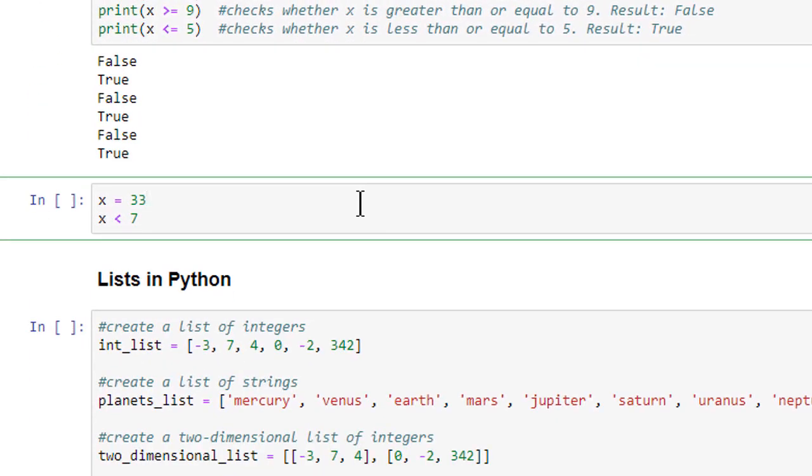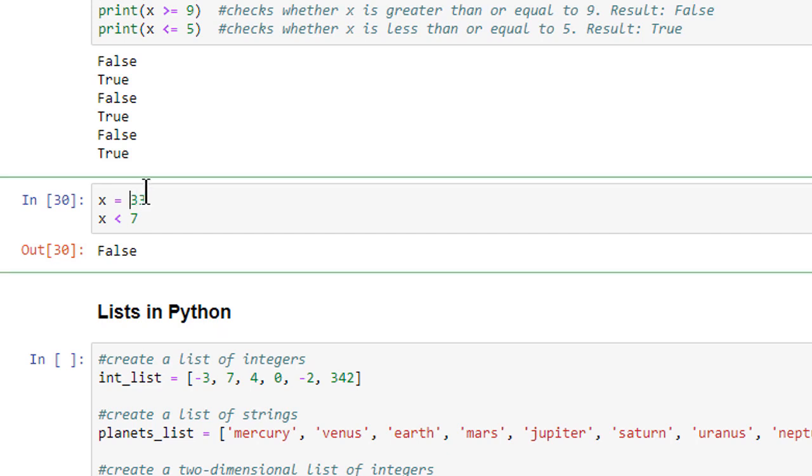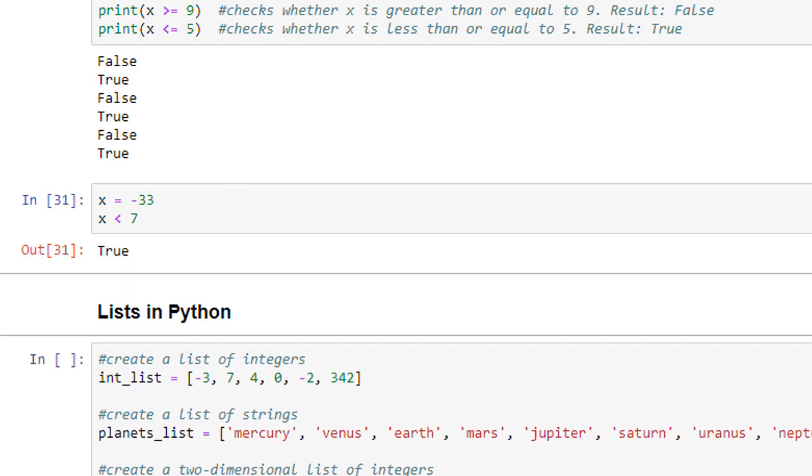This next code cell begins by asserting that x equals 33, and then tests whether x is less than 7. When we run the code cell, the result, of course, is false. If we change the value of x to negative 33, however, and then run the code cell again, the result will be true, because negative 33 is less than 7.